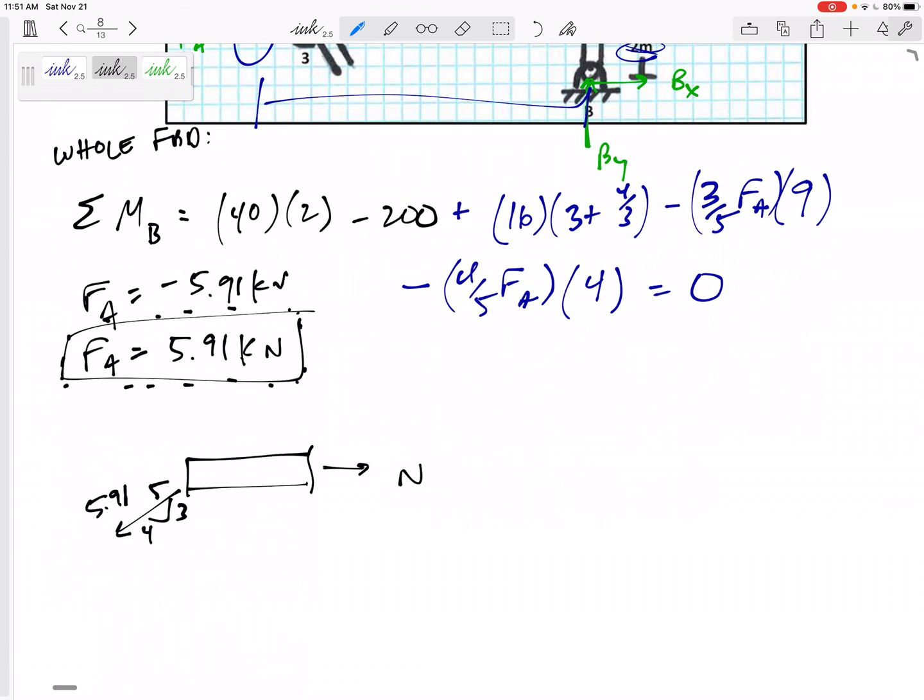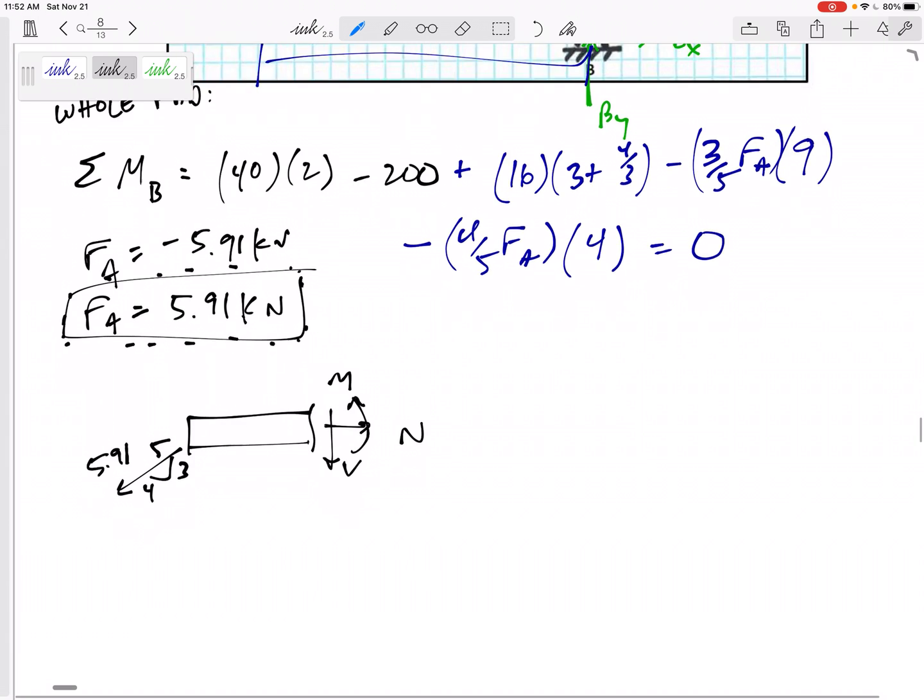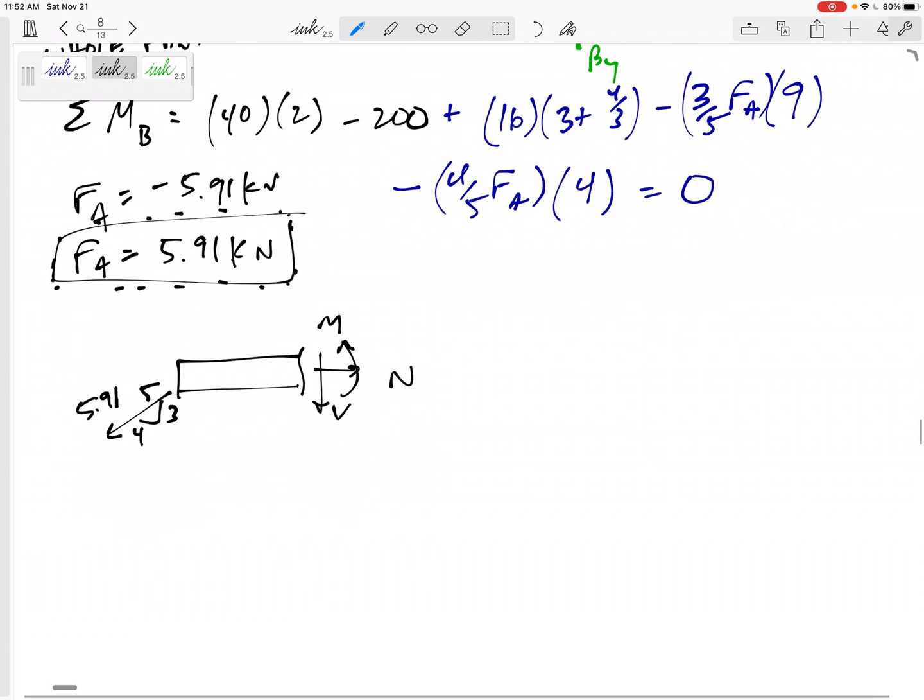And I can solve for the N, V, and M. Draw the N, V, and M in the positive sign convention to begin with. And if my answer comes out positive, then it was positive. My answer comes out negative, then it was negative. And leave the answers boxed in the way they are.